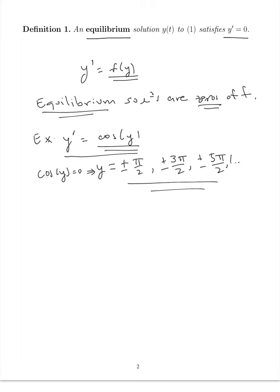What about the other example, y prime is equal to y squared minus 1? Well, this one, I can rewrite it in the following form, and I can see that y squared minus 1 equal to zero implies that y has to be plus or minus 1. So these are the equilibrium solutions. So just a few examples.